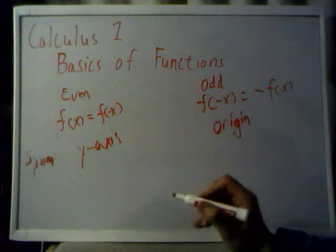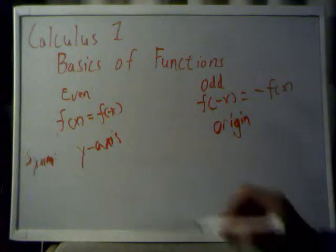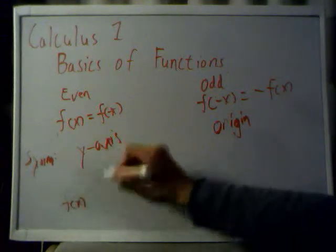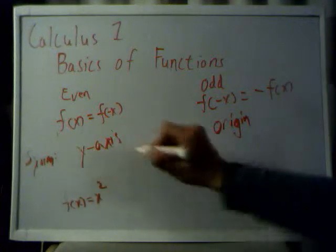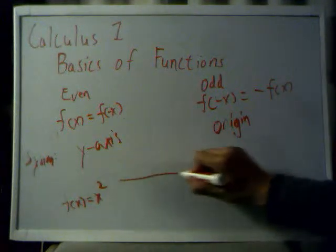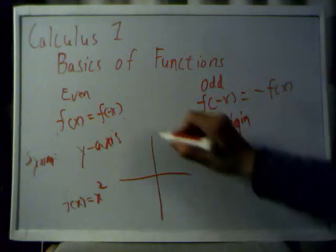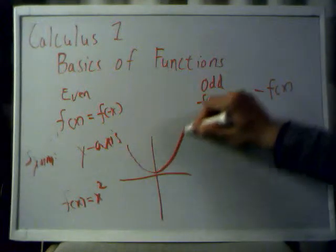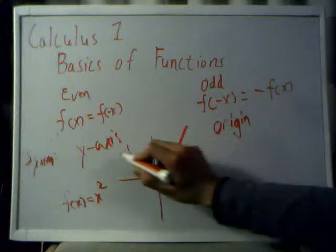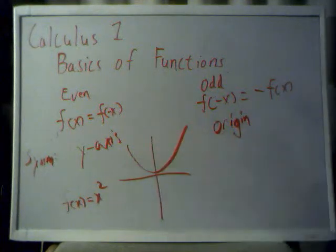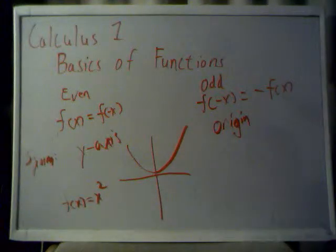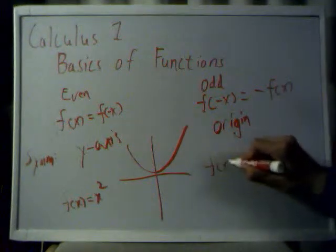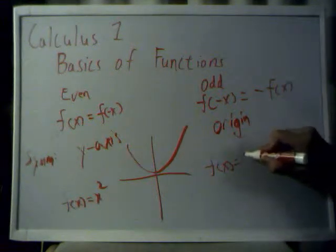How are these different? Well, they're different in the way they're symmetrical. For an even function, it's symmetrical across the y-axis. For an odd function, it's symmetrical about the origin point. An example for an even function is f of x is equal to x squared — our parabola example. You should draw the axes, here's your y-axis, and if I draw the curve, you can see that it's symmetrical across the y-axis. You can fold across the y and it'll match up.